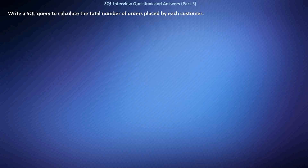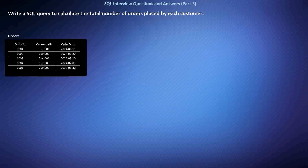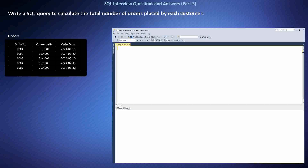Write a SQL query to calculate the total number of orders placed by each customer. We have a table named Orders containing information about orders placed by customers, including the customer ID and order details. To solve this, I used the GROUP BY clause to group the orders by customer ID, then applied the COUNT function to count the number of orders within each group. The result shows the customer ID along with the total number of orders placed by them.